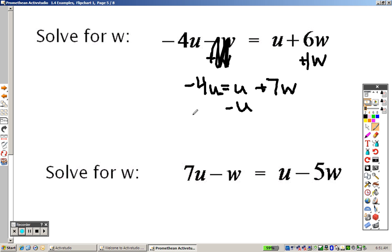Then I minus U on both sides. 4U minus U, that's negative 5U equals 7W. So to get W all by itself, that's 7 times W. I'm going to divide by 7 on both sides. So W equals negative 5U over 7.